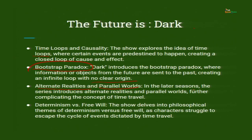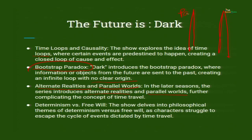In the later seasons, Dark introduces alternate realities and parallel worlds, further complicating the concept of time travel. Characters now travel between two parallel realities — in one reality characters A, B, and C are doing one thing; in another reality completely different characters are doing something else. They shift between realities, each with its own past, present, and future, and the entire timeline gets completely messed up. The readers need to keep a notebook tracking who is jumping to which timeline. The show delves into philosophical themes of determinism versus free will, as characters struggle to escape the cycle of events dictated by time travel.